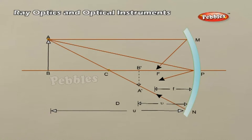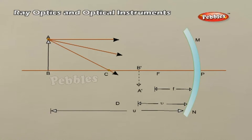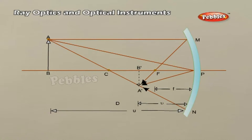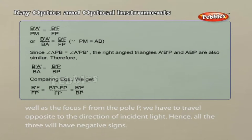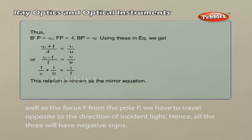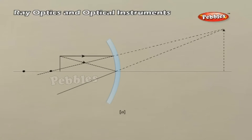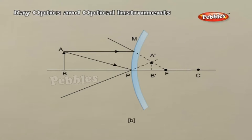Point A' is the image of point A if every ray originating from point A and falling on the concave mirror after reflection passes through the point A'. We now derive the mirror equation, or the relationship between the object distance u, image distance v and the focal length f. Light travels from the object to mirror MPN; hence this is taken as the positive direction. To reach the object AB, the image A'B', as well as the focus F from the pole P, we have to travel opposite to the direction of incident light; hence all three will have negative signs. We have derived the mirror equation and the magnification formula for the case of a real inverted image formed by a concave mirror. With the proper use of sign convention, these are valid for all cases of reflection by a spherical mirror whether the image formed is real or virtual.